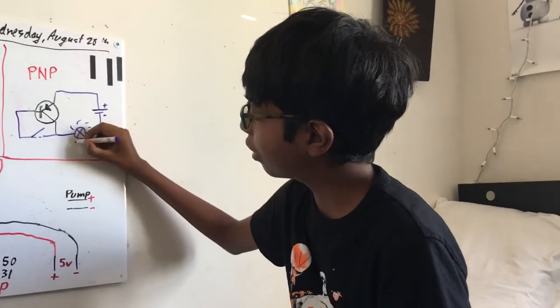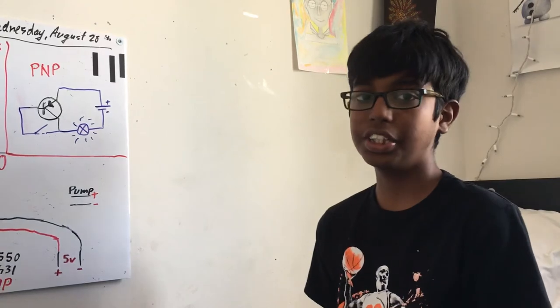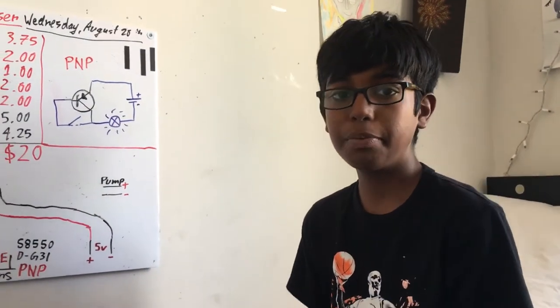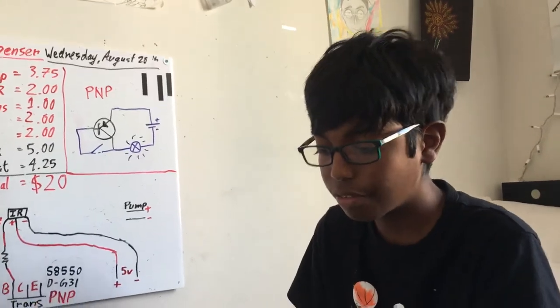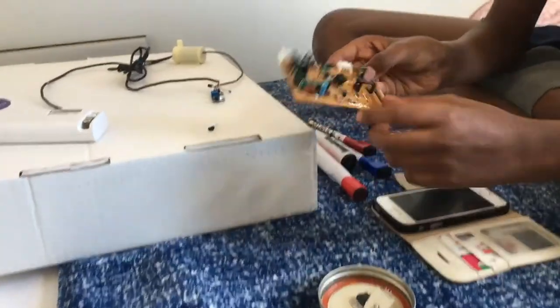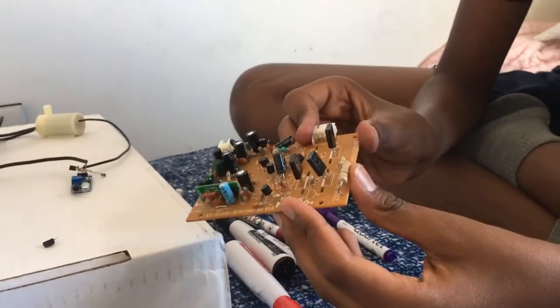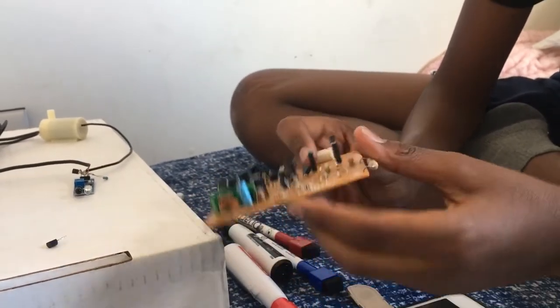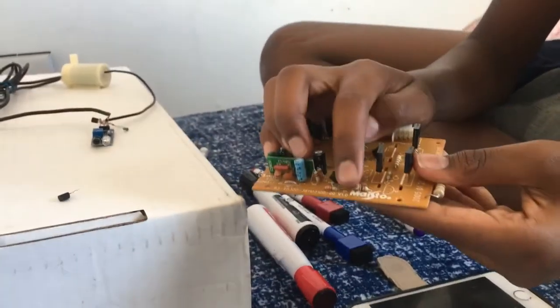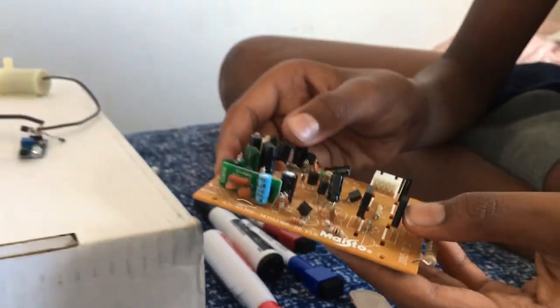This makes the bulb light up. So that's a basic introduction of how a PNP junction transistor works. Here I have a few types of transistors. You can see these long pieces are basically PNP transistors. These small ones you see right here are PNP or can be NPN junction transistors.